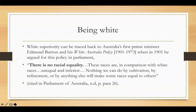I want to jump to the idea of what it means to be white. We've been talking about dot painting, Bronwyn Bancroft, and identity. What does a white identity mean? In this country, Australia, with our first white parliament and first white prime minister, there was something called the White Australia Policy. This policy was based on the idea that there is no racial equality — that white identity is superior and everybody else, including Aboriginal people, is unequal and inferior.